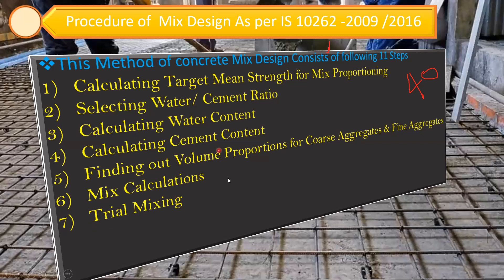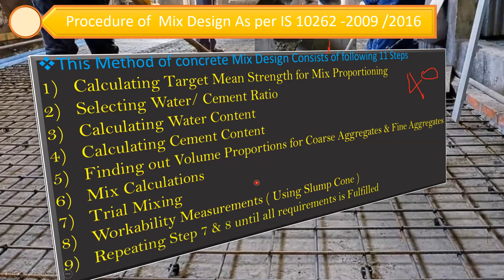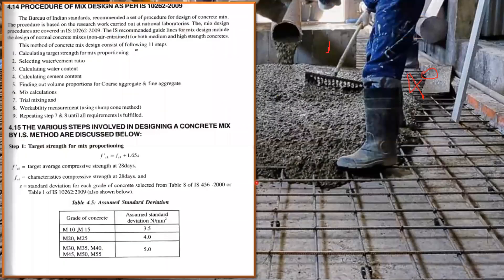Once all calculations are done, you get a ratio — for example, 1:1.3:2.6. You then do trial mixing and check the slump test for workability to confirm proper slump is achieved. Steps 7 and 8 are repeated until all requirements are fulfilled. This is a basic understanding of mix design before we go into the detailed procedure.